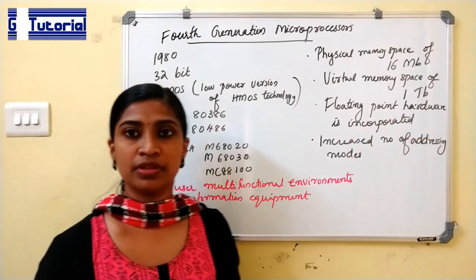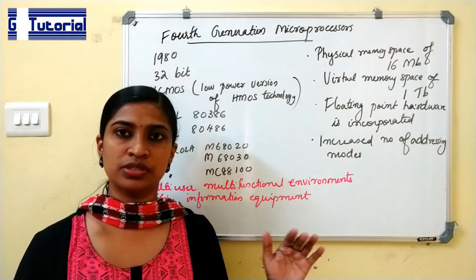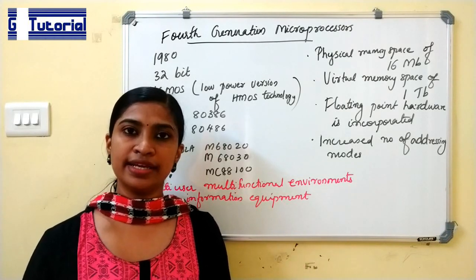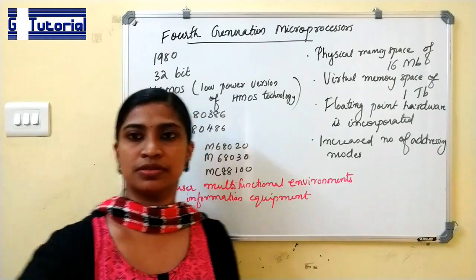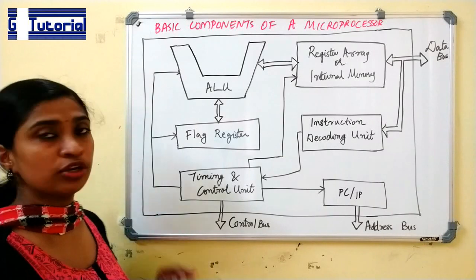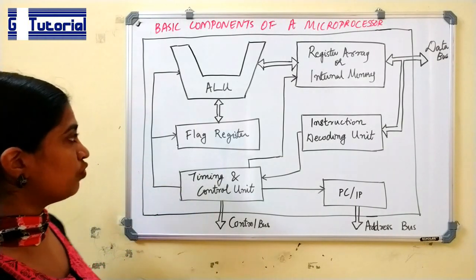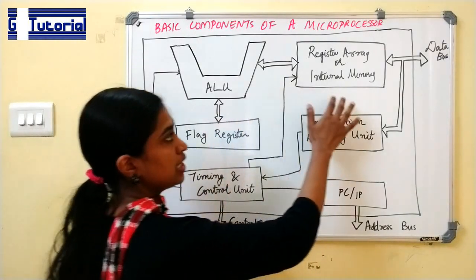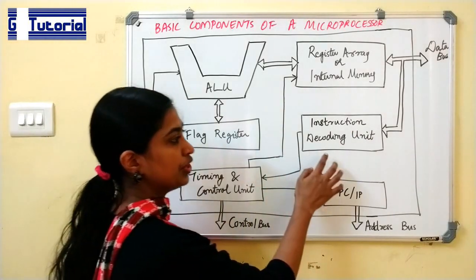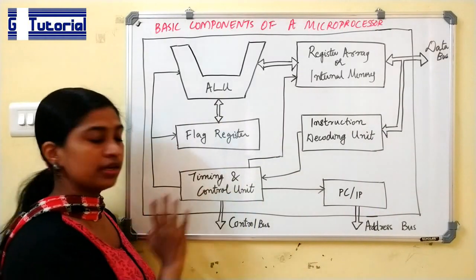Now let us see about the architecture of a microprocessor. This is the block diagram of the basic components of a microprocessor. A microprocessor mainly consists of an arithmetic and logic unit, a register array or internal memory, a flag register, an instruction and decoding unit, a program counter or instruction pointer, and a timing and control unit.